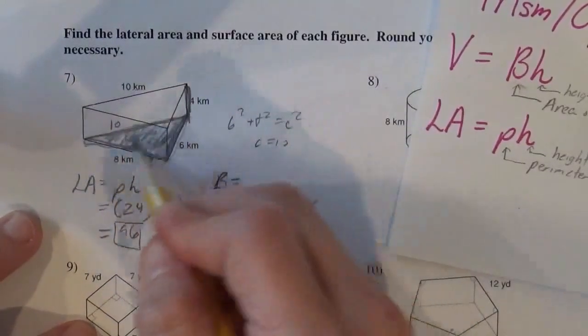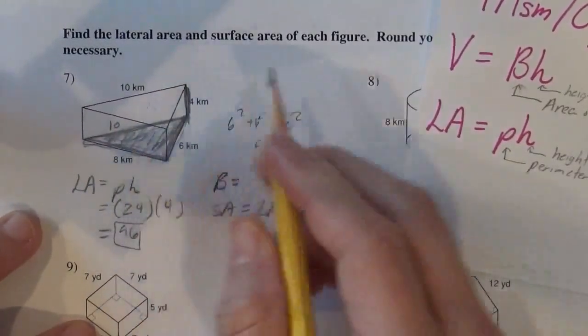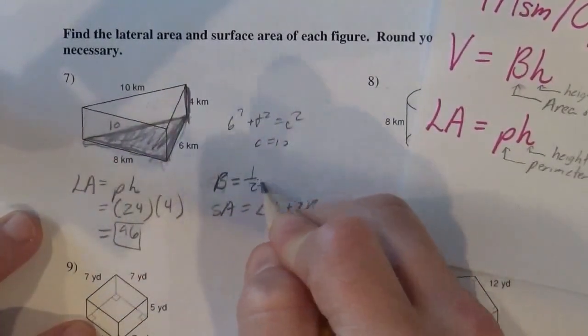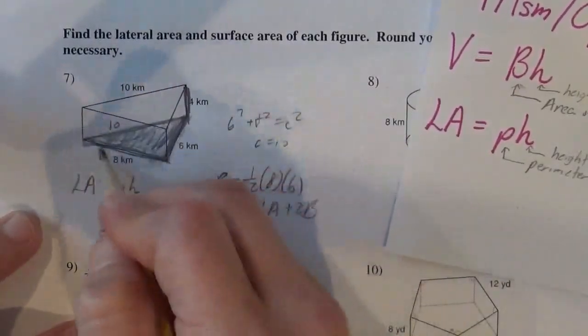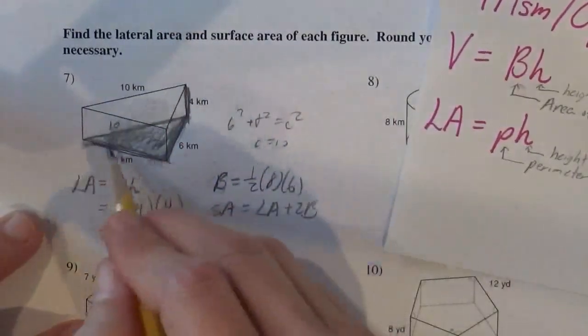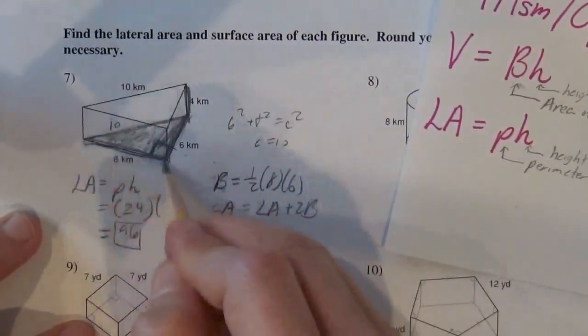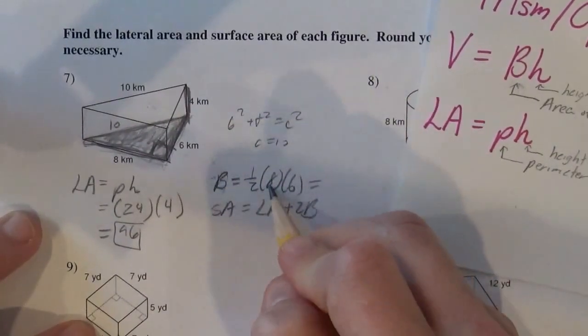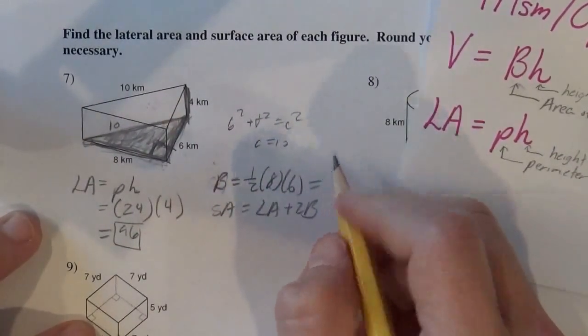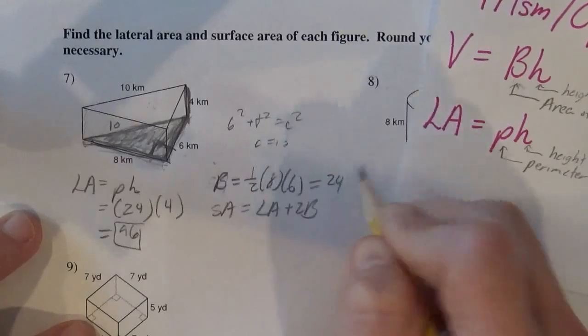So the base, going back to the base, you want to find the area of that. It's a triangle: one half the base of the triangle times the height of the triangle. So just look at that and ignore the rest of it. The base and the height of the triangle are perpendicular, the 8 and the 6. So half of 8 is 4 times 6 is 24.